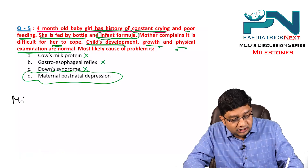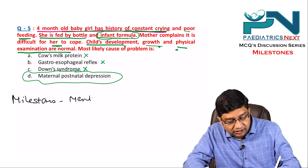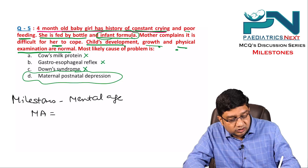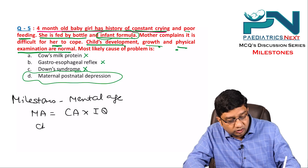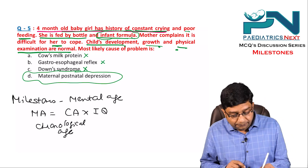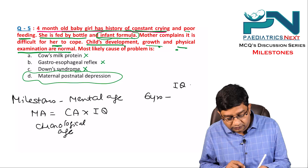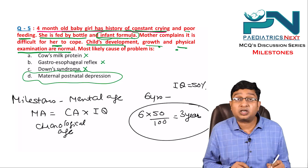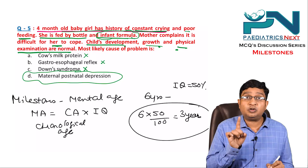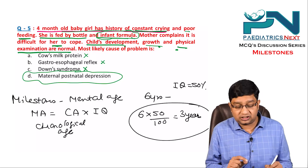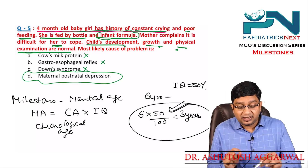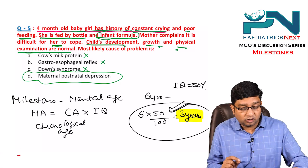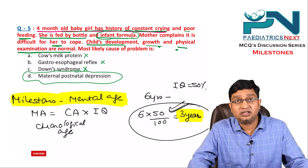One more important point: all milestones depend upon mental age, not chronological age. Mental age is calculated as: chronological age multiplied by IQ divided by 100. For example, a six-year-old with an IQ of 50 has a mental age of three years (6 × 50 / 100 = 3). Although the child is six years old, they will only have milestones normally seen at three years. All milestones depend upon mental age.